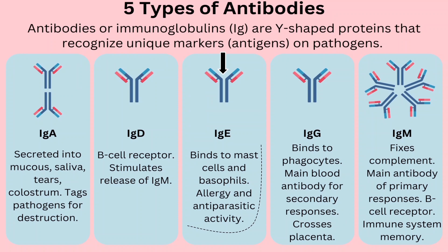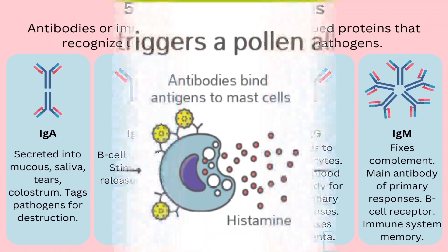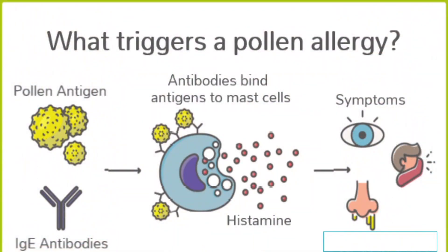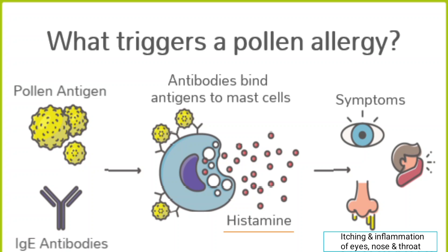Let's take the simple allergen — pollen. After the IgE antibody attacks the pollen, it triggers inflammatory chemicals, mainly histamine. This causes itching and inflammation of the mucous membranes in the nose, eyes, and throat.